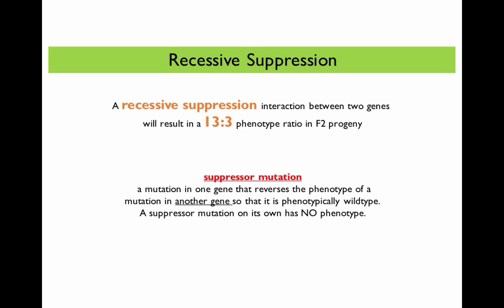Usually, the suppressor mutation on its own — so a homozygous recessive individual with the suppressor mutation — would not present any phenotype. So again, recessive suppression is an interaction between two genes where one of those genes has a mutation that we call a suppressor mutation, and we see a 13 to 3 phenotype ratio in the F2 generation.